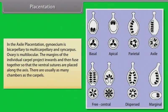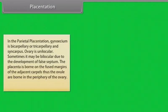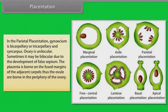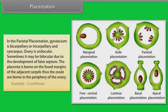In axile placentation, gynoecium is bicarpellary to multicarpellary and syncarpous, ovary is multilocular. The margins of individual carpels project inwards and fuse together so that ventral sutures are placed along the axis, with as many chambers as carpels. Example: Malvaceae. In parietal placentation, gynoecium is bicarpellary or tricarpellary and syncarpous, ovary is unilocular, sometimes bilocular due to false septum. Ovules are born in the periphery of the ovary. Example: Cruciferae.